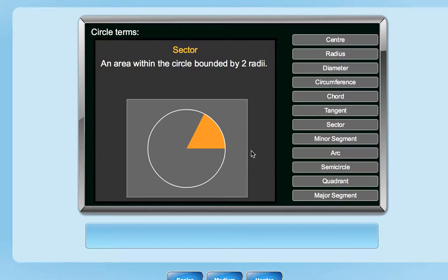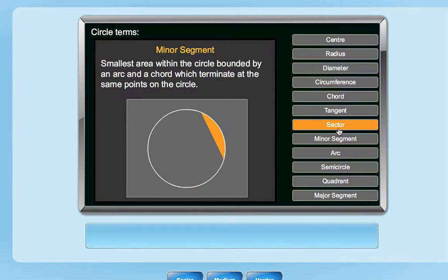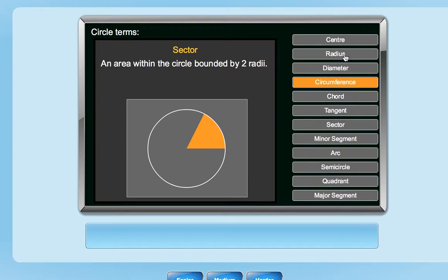So if you want to know what a sector is, it'll show you what a sector is. If you want to know what the circumference is, it will show you the circumference. And if you want to know what a quadrant is, it'll show you a quadrant. So you've got minor segments and sectors, all these different things.